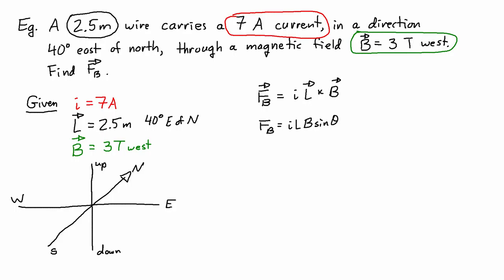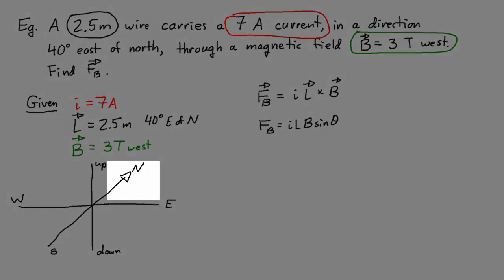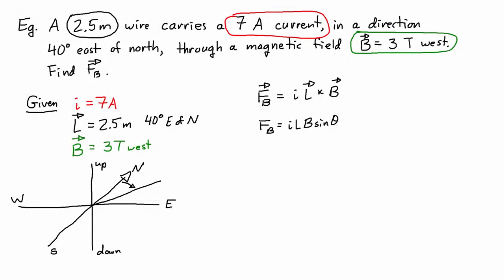Okay, so with respect to these directions then, I need to draw this out. L is 2.5 meters 40 degrees east of north. So that means I start north and then I go 40 degrees towards the east like that. And then I can draw my L vector.